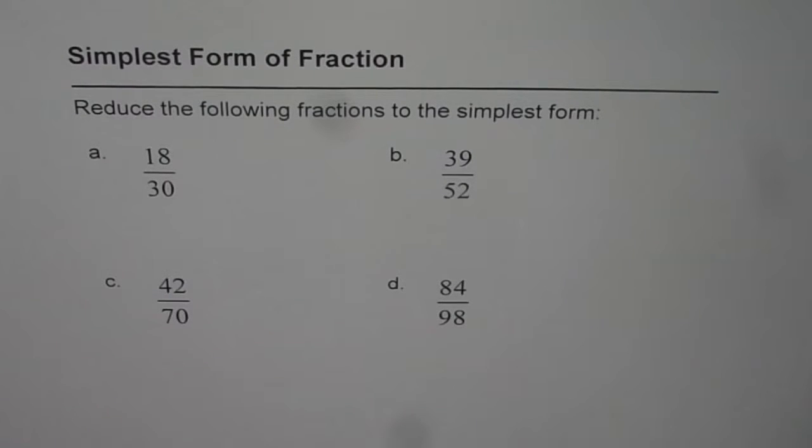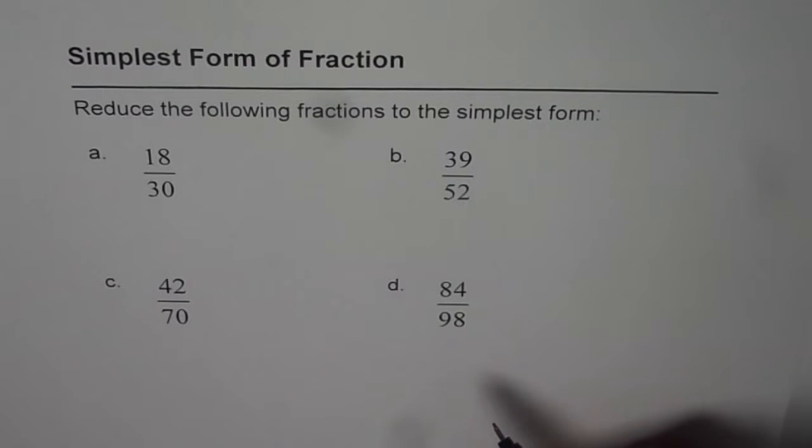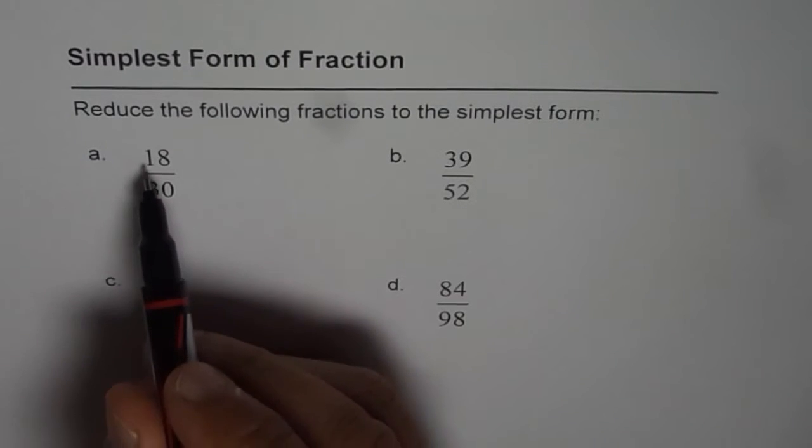We have four examples here and this time we are going to reduce them using repeated division and we will divide at the same spot. For example, I will show you 18 over 30.